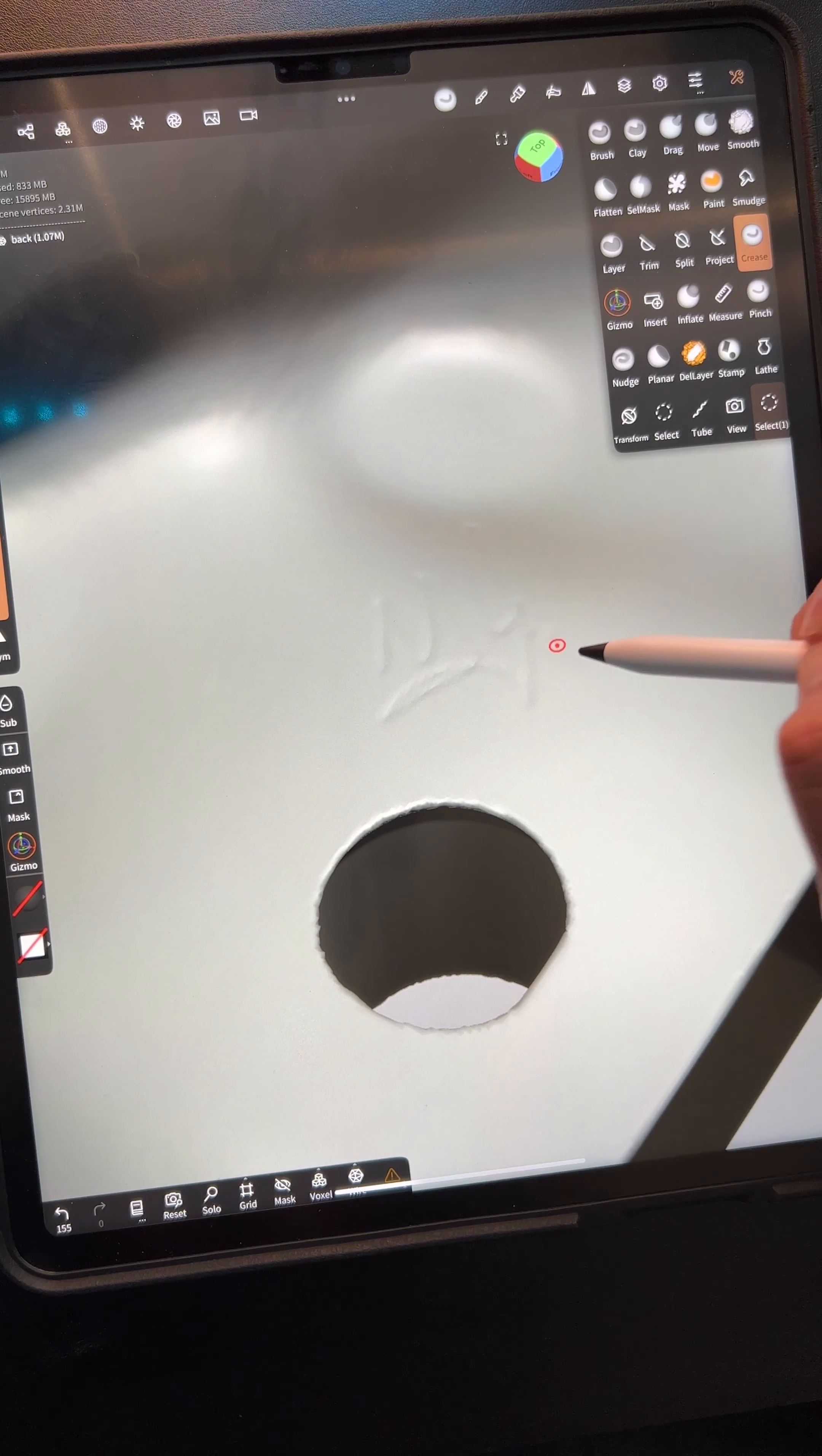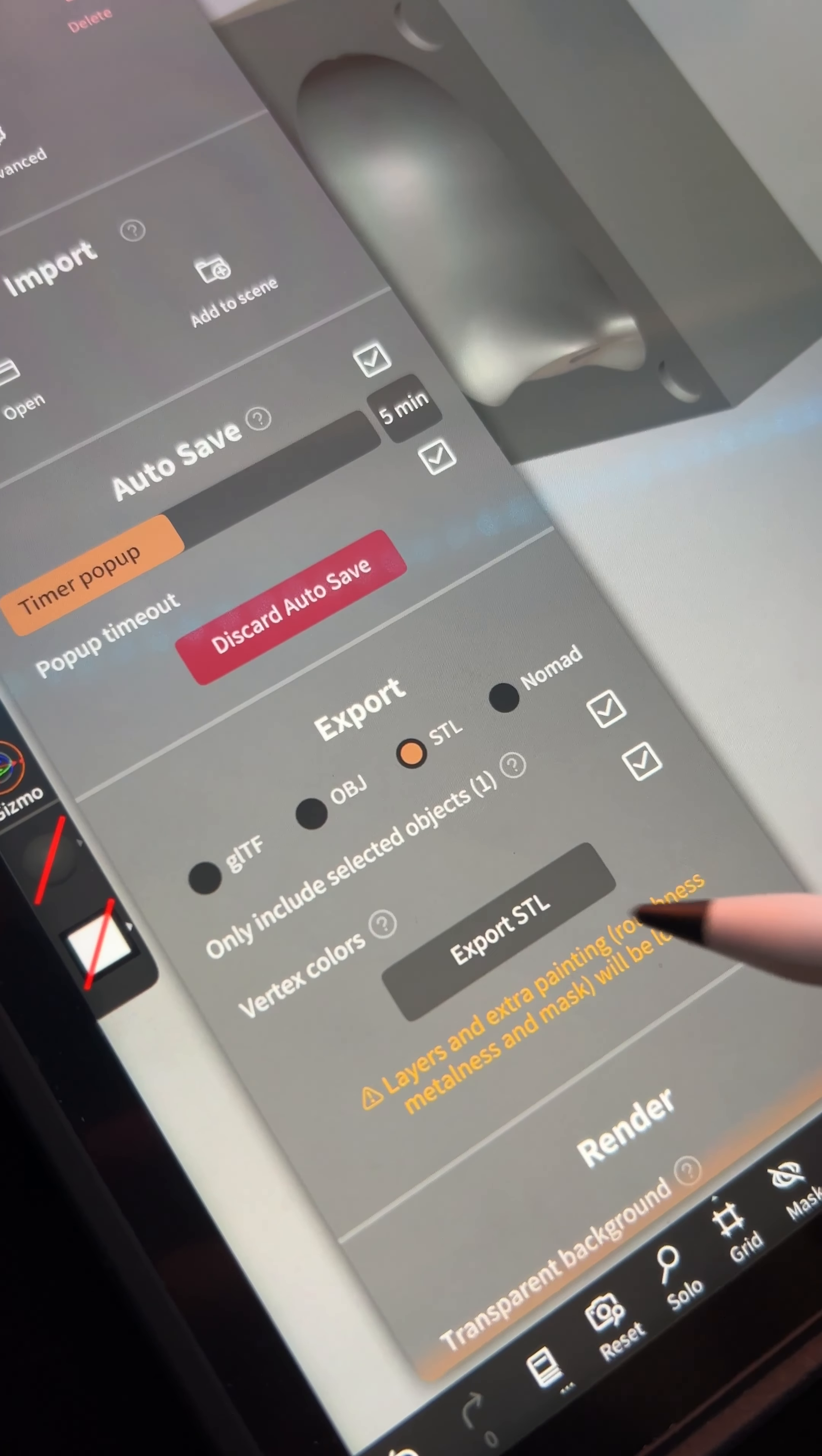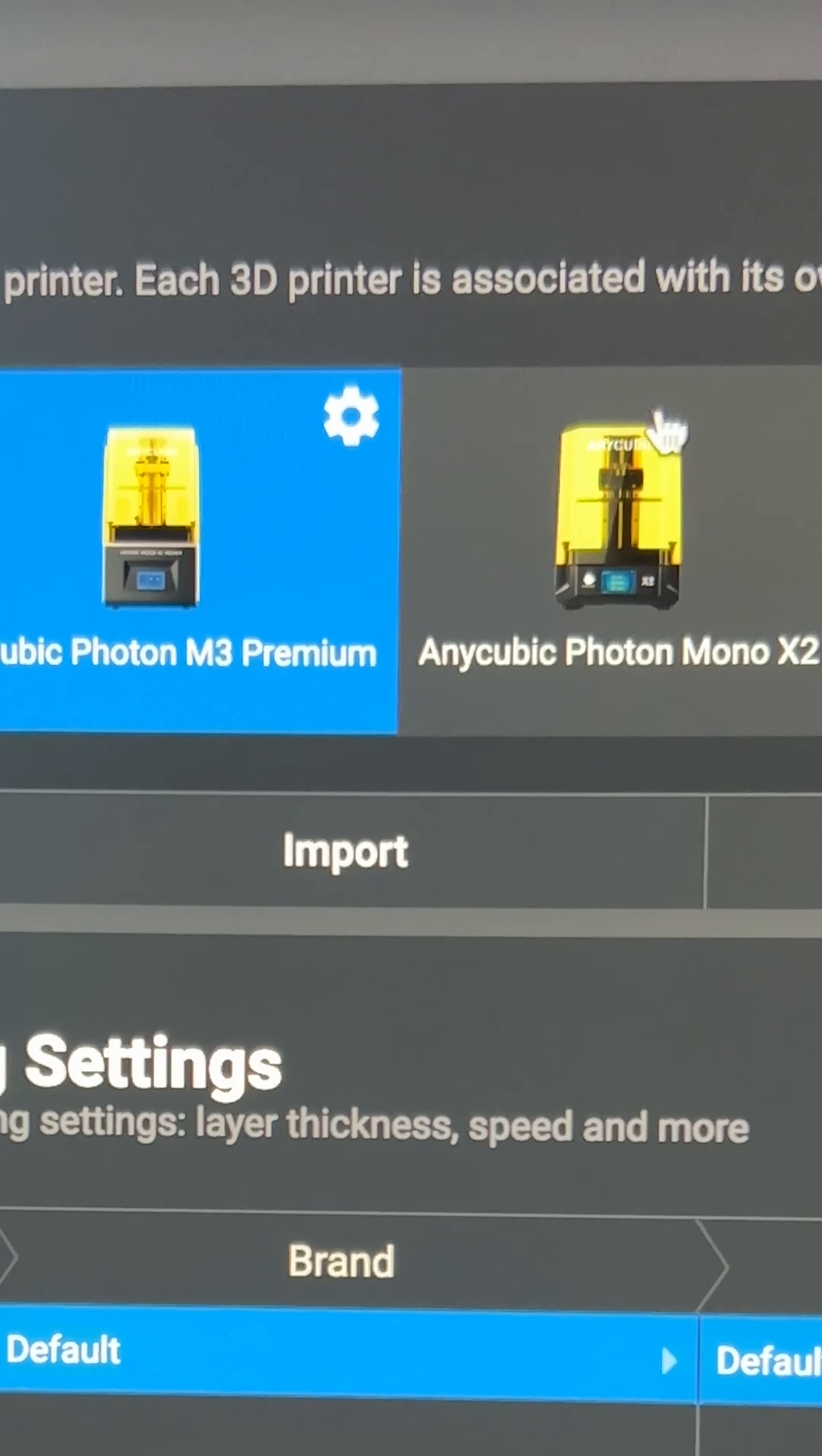Sign my work in case this ever ends up on the antique roadshow. I deviated a little bit by adding the pour holes in the bottom instead of the top. Export as an STL file to the desktop and here in Lychee Slicer. I choose my printer, which is the Photon Mono X2.